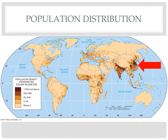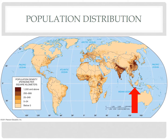East Asia is the next largest cluster, focusing on the eastern part of the world's most populous country, China, as well as Taiwan, Japan, and the Korean Peninsula. Western Europe is the largest cluster outside of Asia, where many people live in high-density urban areas like London, Paris, Berlin, and Rome, but the population has been shrinking in more than a dozen European countries. Rounding out the big four is Southeast Asia, where more than half of this region's population lives in just two island countries – Indonesia and the Philippines.